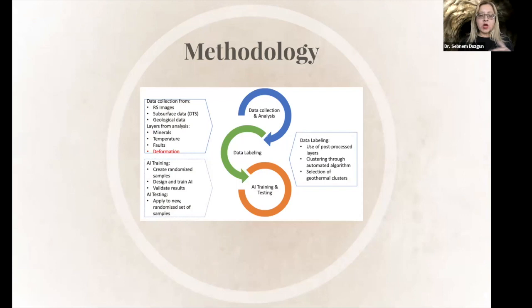So for this, we have three-step methodology. We have data collection and analysis. Of course, developing the labeling and also training AI and also predicting that AI system for the other sites. I will go into the details of data collection and analysis and how we develop this labeling. So our data collection includes surface and subsurface data. So we have some remote sensing images. We have DTS measurements for subsurface data, some geologic data, and we obtain some information layers from the collected data. Those are basically mineral maps, temperature faults and deformation. I'm going to explain what are those.